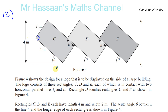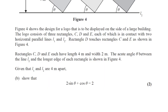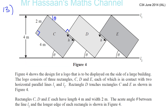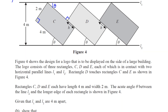The acute angle theta between line L2 and the longer edge of each rectangle is shown. And as these lines are parallel, this angle must also be theta. Now, given that L1 and L2 are four meters apart, we need to show that 2 sine theta plus cosine theta equals 2. So we need to link the total height between those two parallel lines to theta — the total height being four meters.